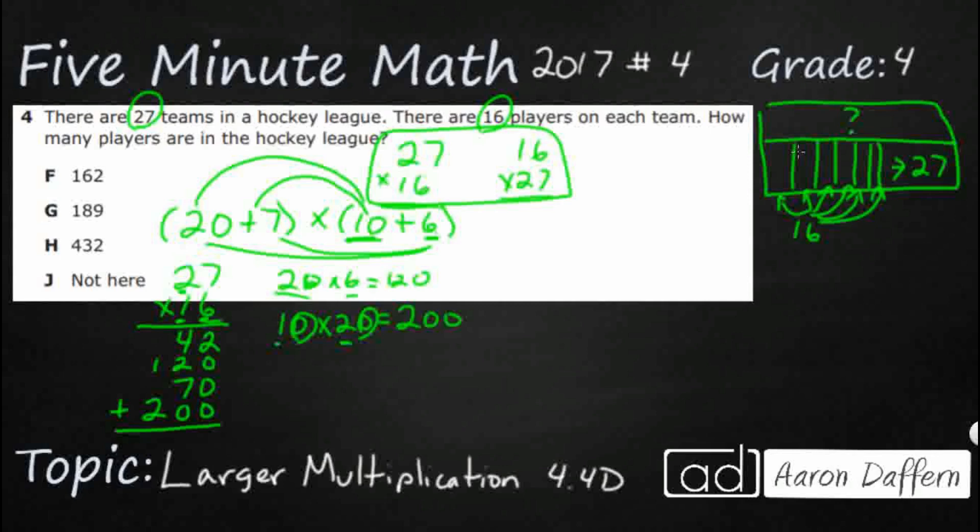And if we just add them up, I've got 2. 4 and 2 is 6. Add the 7 is 13. And then I've got 1, 2, 3, 4. 432, which is looking like H.